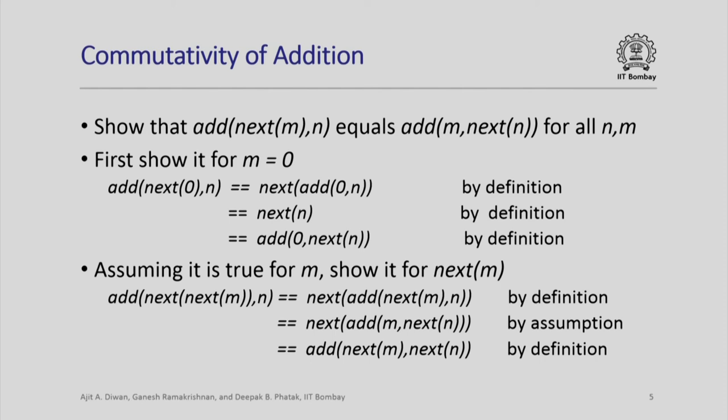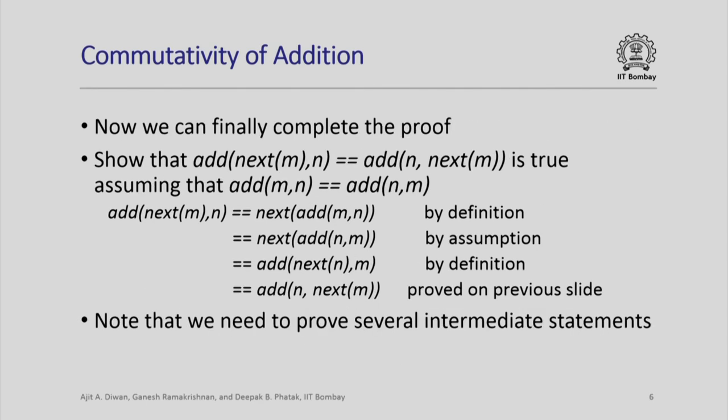So what we have shown is that add(next(m), n) = add(m, next(n)). Now we can finally complete the commutativity proof.